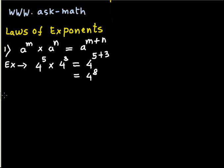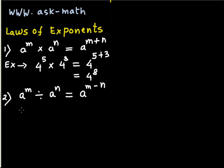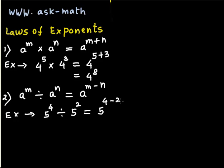The second law is: bases are same, exponents are different, and there is a division sign in between them — a to the exponent m divided by a to the exponent n — then you have to subtract the second exponent from the first. For example, 5 to the exponent 4 divided by 5 to the exponent 2: subtract 4 minus 2, so your answer will be 5 squared.